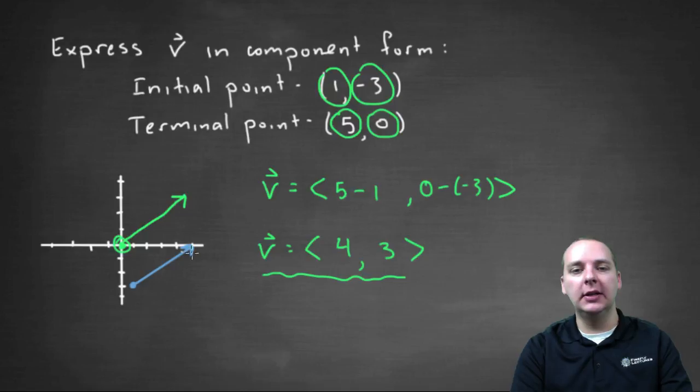And the reason this works is when we took five minus one, what we were really doing was getting this distance here of four. And when we took zero minus negative three, we were really getting this distance of three right here.